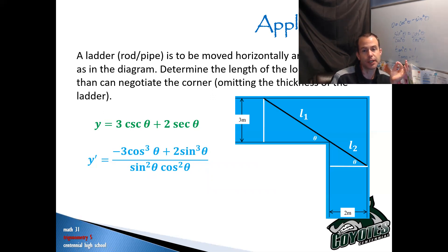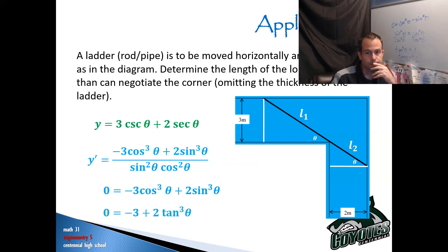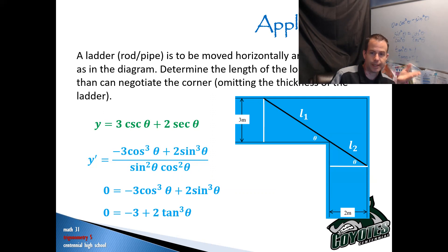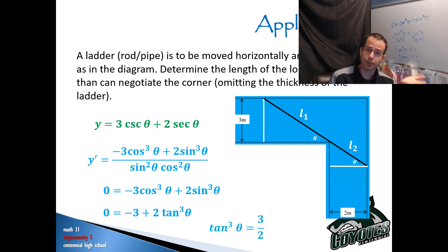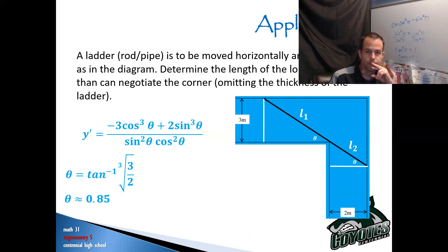Where the derivative equals zero, I take the numerator and set it equal to zero: negative 3 cos cubed theta plus 2 sine cubed theta equals zero. I divide everything by cos cubed theta, giving negative 3 plus 2 tan cubed theta equals zero. Solving: 2 tan cubed theta equals 3, so tan cubed theta equals 3/2, meaning tan theta equals the cube root of 3/2. Taking the inverse tangent of that gives theta approximately equal to 0.85 radians.